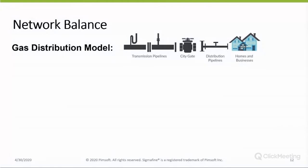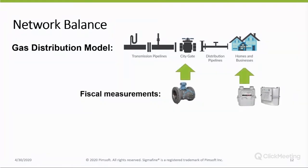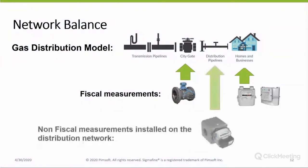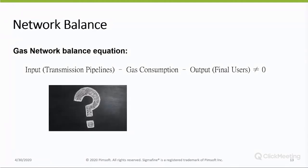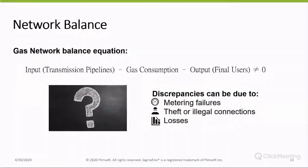The gas network model requires knowledge about the gas consumption of various users. In a gas distribution network, we will have fiscal measurements at a city-gate level and at a home and business level. More and more companies have started campaigns to install new fiscal measurements on their pipelines, and this data can be implemented in the Sigma Fine model for network balance. At the moment, companies are applying the balance equation: input minus gas consumption minus output, which gives a result different from zero. The question is — why do we have an imbalance? Discrepancies can be due to metering failures, theft, illegal connections, or losses.